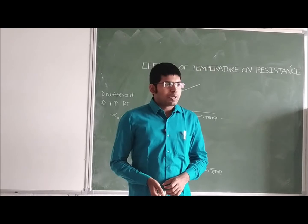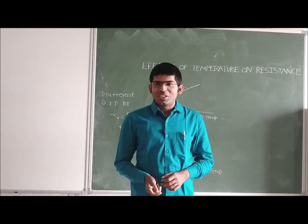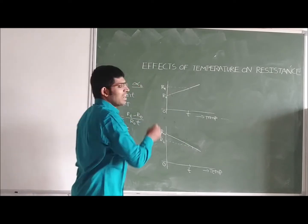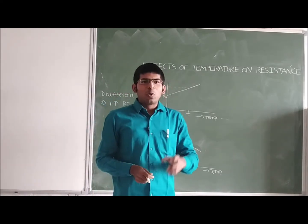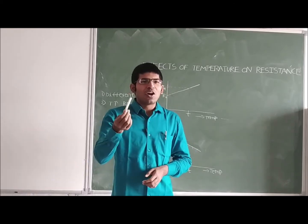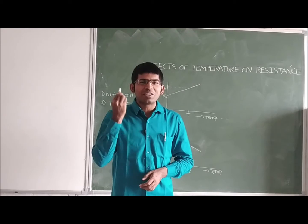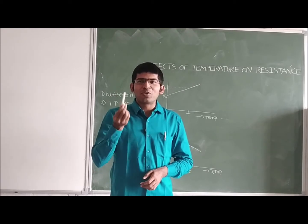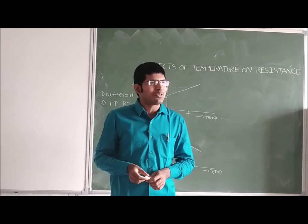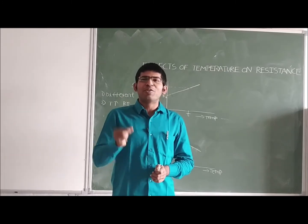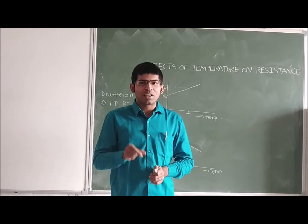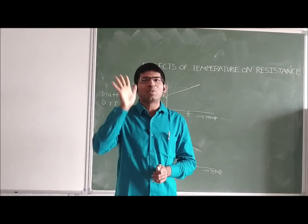We have already discussed about the temperature coefficient of resistance. The temperature coefficient of resistance, alpha naught, determines how the resistance of a material varies with temperature. For example, if I want to know how a chalk piece's resistance varies with temperature, I need to find alpha naught for that chalk piece. Every material in nature has a temperature coefficient, represented by alpha naught, and it is fixed for that material.